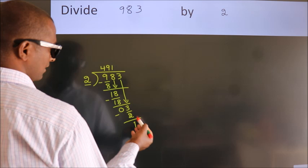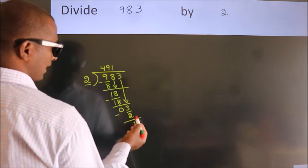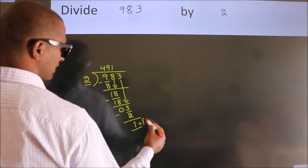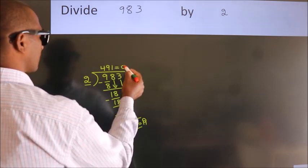After this, no more numbers to bring down. So we stop here. This is our remainder. This is our quotient.